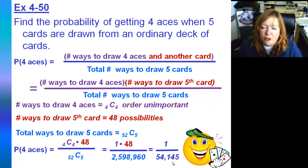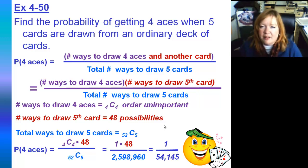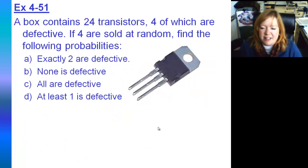Reduced to lowest terms, that's one out of 54,145. Not bloody likely. And this is why casinos make a lot of money and why people don't like casinos.